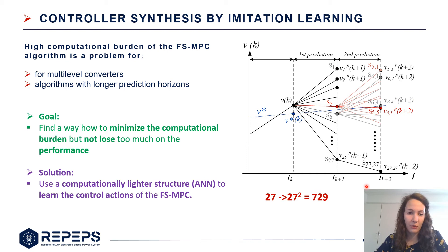And the solution I propose here is to use a shallow neural network which can execute much faster than the original finite set MPC.